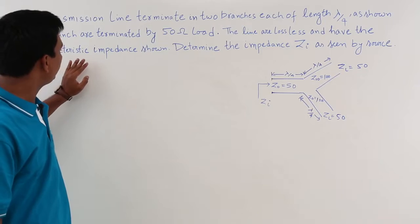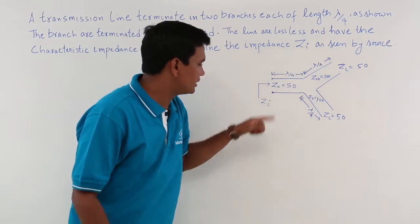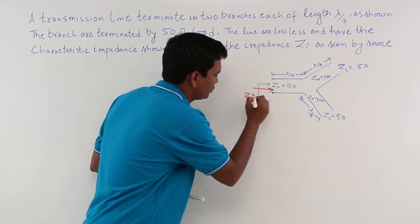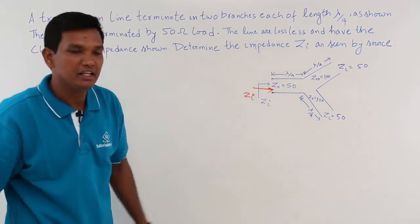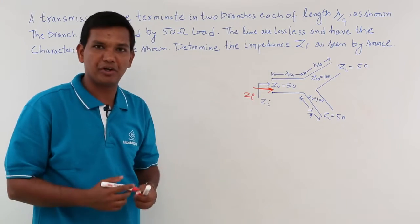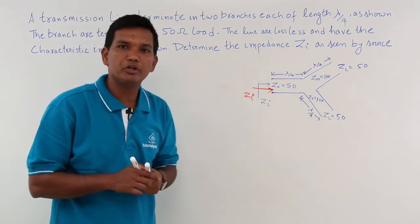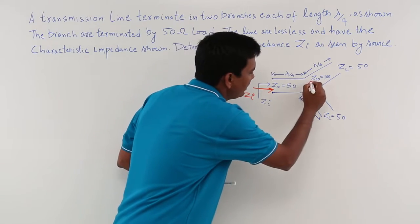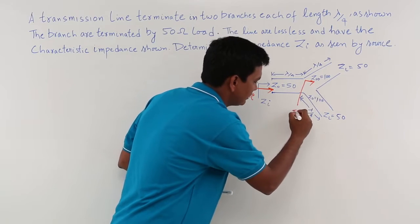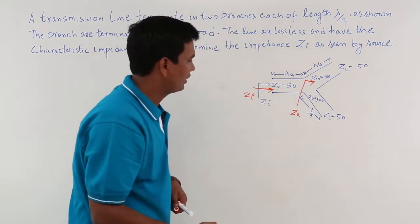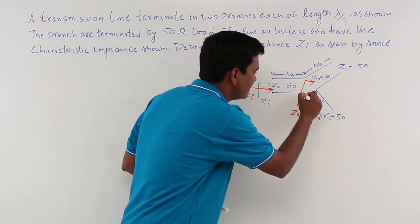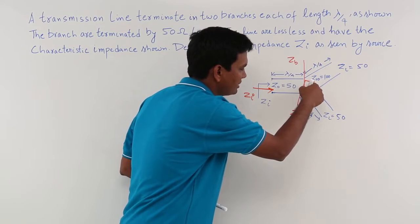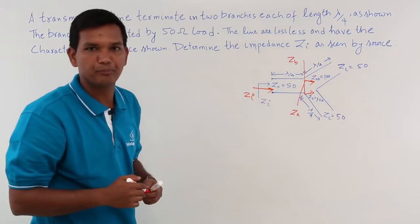We have to find the input impedance seen by the source — basically the impedance seen from this side, looking at this point. To solve the problem, I am going to find one input impedance here, let me call it ZA, and the input impedance here, let me call it ZB.